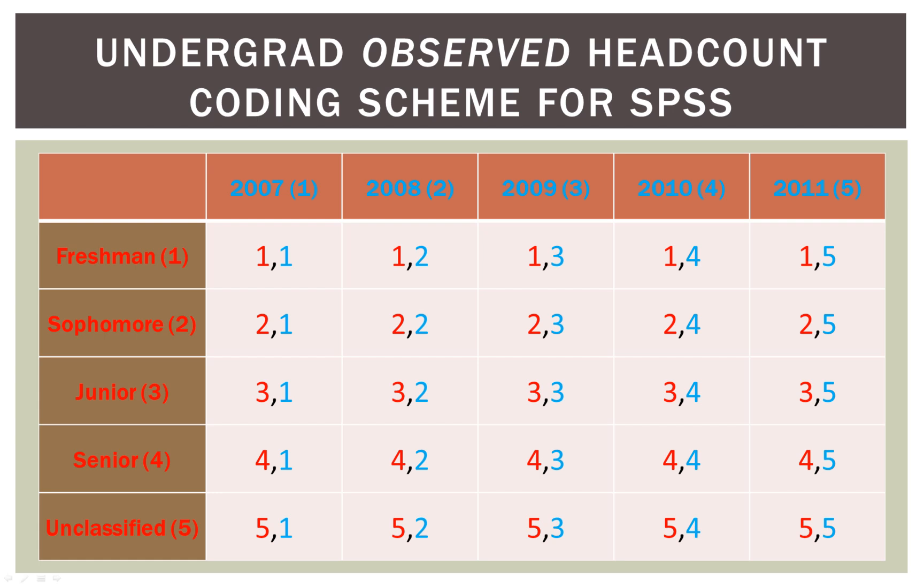To use this in SPSS, and other stats programs, we're going to have to develop a coding scheme. Each year is given a number: 2007 will be coded as 1, 2008 as 2, and so on. On the left-hand side, we do the same for grade levels — freshman coded as 1, sophomore as 2, junior as 3, and so forth. We'll use this coding scheme to define our variables in SPSS and enter the data to do our chi-square.